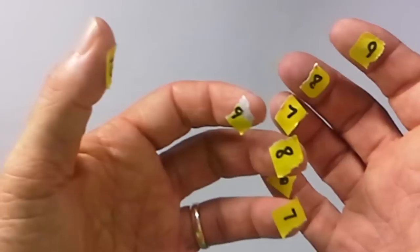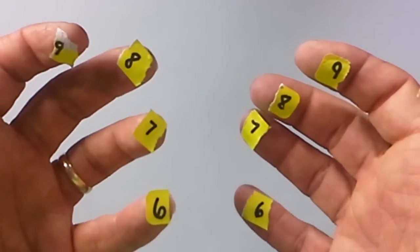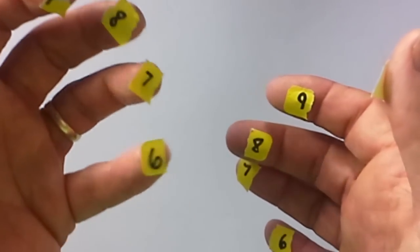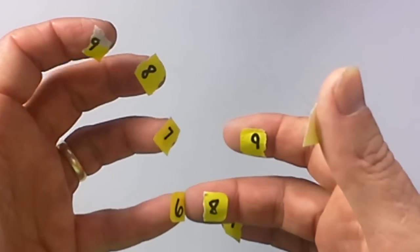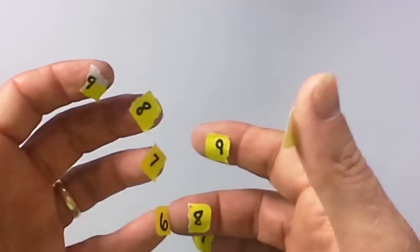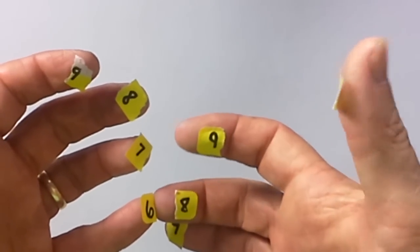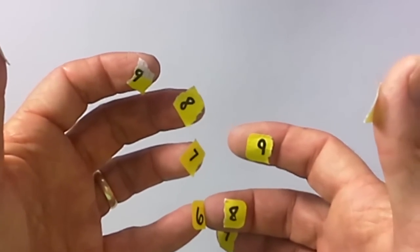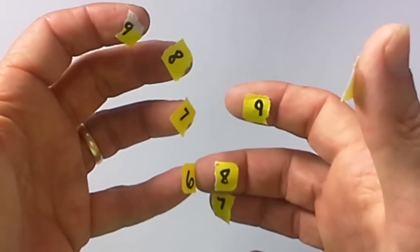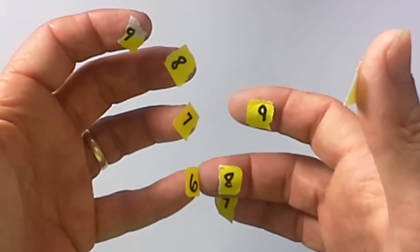And finally, let's go with 6 times 8. I'll do it fairly quickly just to show you that it's really pretty effective. Six touching 8. I have 1, 2, 3, 4 above. Four times 2 is 8. Plus below I have 1, 2, 3, 4. Forty plus 8 is 48.